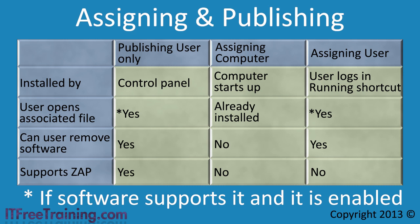The last choice when installing software is to assign it to a user or users. When software is assigned to the user, it can be installed in one of two ways. First, it can be configured to be installed automatically when the user logs in. This means regardless of which computer the user logs into the domain with, the software assigned to that user will automatically install.